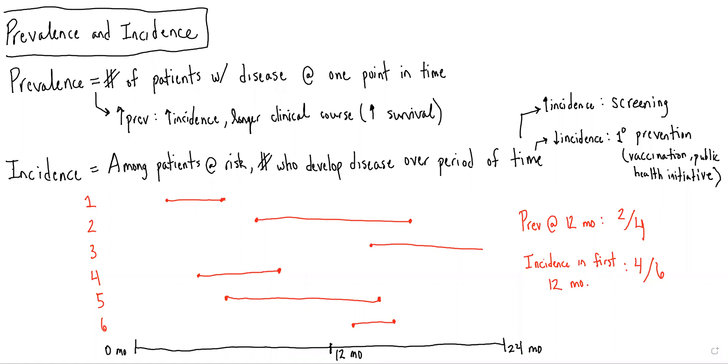Prevalence represents the number of patients with the disease at one point in time. It's a single slice in time when we're determining how many patients have the disease.